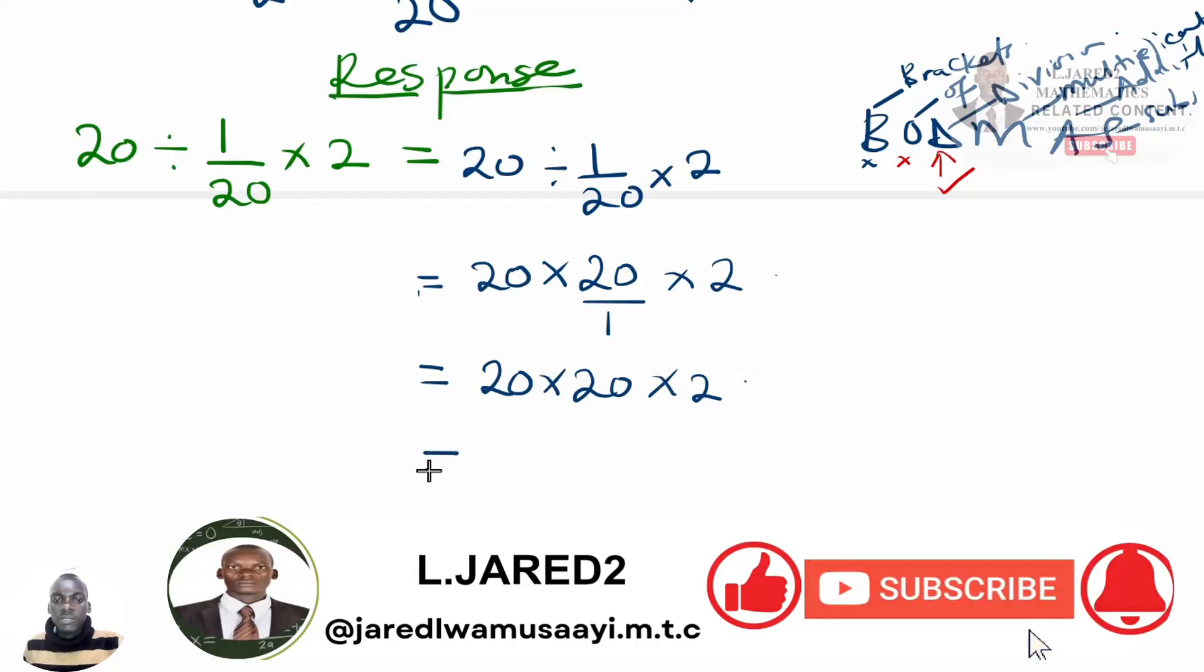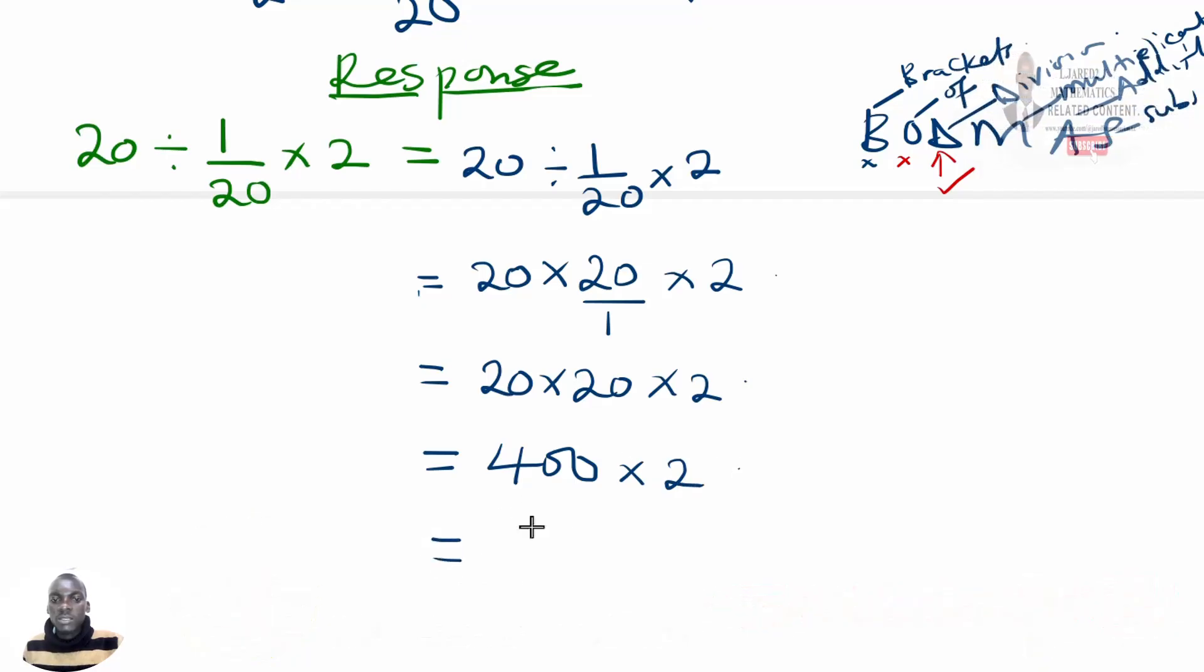So as we simplify, 20 multiplied by 20, that is 400, then multiplied by 2. So 400 multiplied by 2, we are getting our answer to be 800.